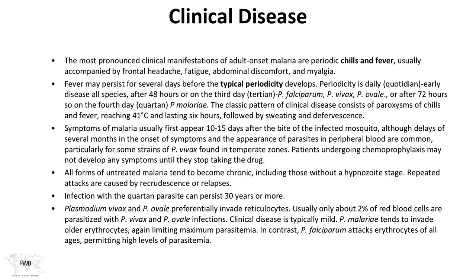Plasmodium vivax and ovale preferentially invade reticulocytes — the young red cells — so parasitemia is generally only about 2%. Plasmodium malariae tends to invade older erythrocytes, similarly limiting parasitemia. However, Plasmodium falciparum can attack erythrocytes of all stages, permitting very high levels of parasitemia.